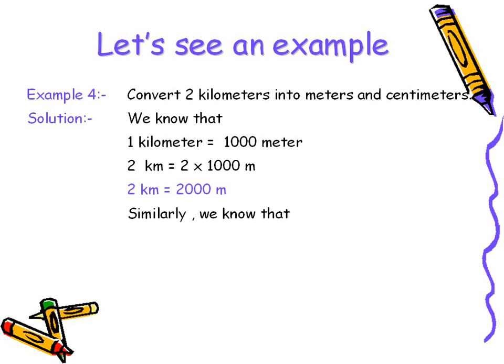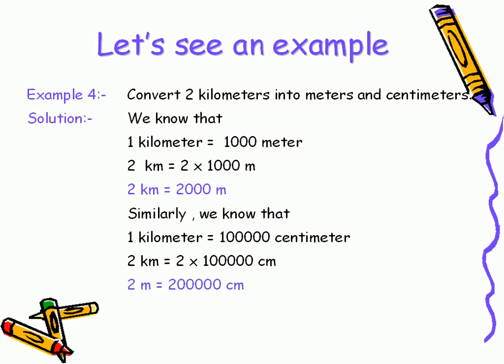To convert kilometers into centimeters, let's recall the formula that one kilometer is equal to one hundred thousand centimeters. Therefore, two kilometers would be equal to two times one hundred thousand centimeters, which would give two hundred thousand centimeters as the required answer.